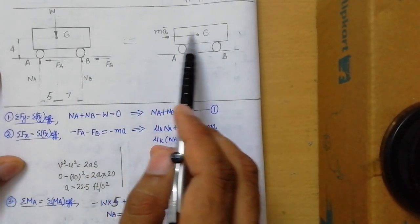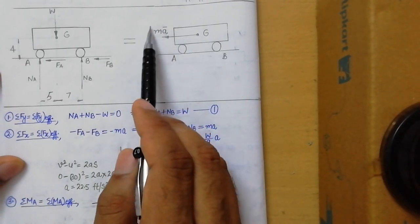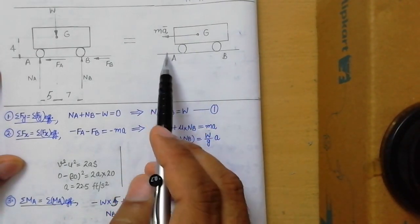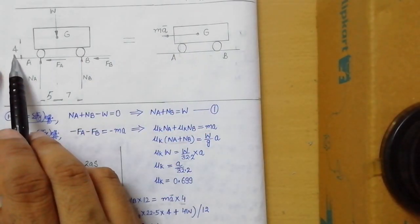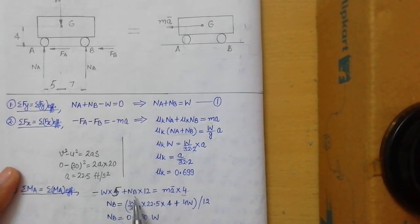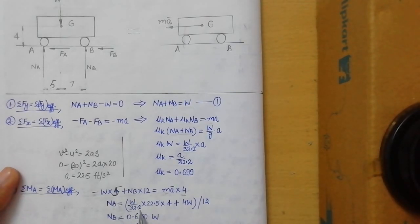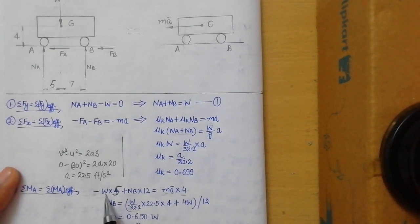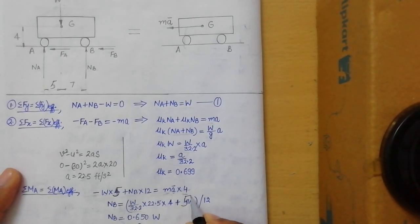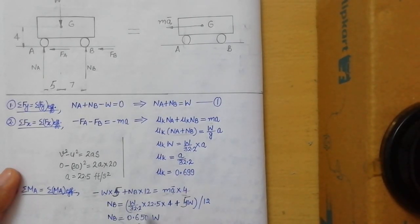The effective moment is due to the ma vector acting horizontally at the center of gravity. The perpendicular distance from A to this vector is the vertical height, which is 4 feet. So the moment equation becomes: −W·5 + NB·12 = (W/g)·a·4. Converting m = W/g, with g = 32.2 ft/s² and the calculated acceleration, we substitute the known values. Rearranging: NB·12 = (W/32.2)·a·4 + 5W. Dividing by 12 gives NB in terms of W.